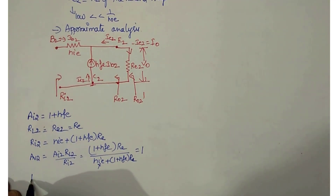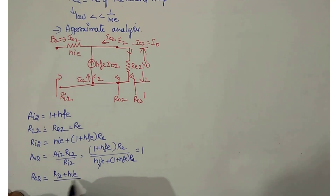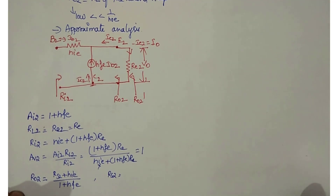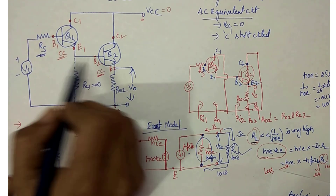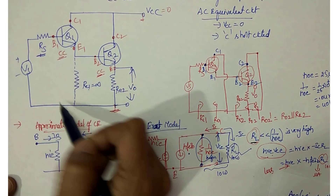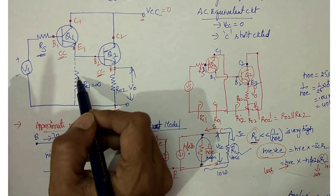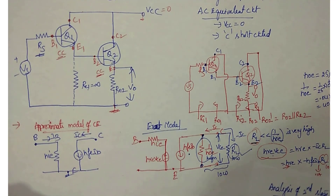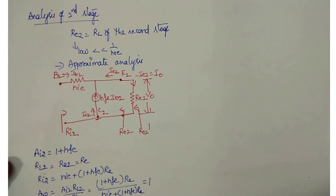The output impedance R02 = (RS2 + HIE) / (1 + HFE). RS2 for the second stage is R01, the output impedance of the first stage, since there is no external RS for the second stage. Finally, R02-dash equals R02 in parallel with RE2. This completes the analysis of the second stage.